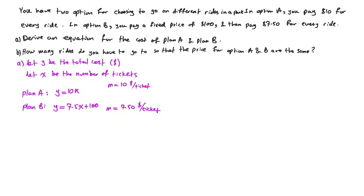For part B of this question: how many rides do you have to go on so that the price for option A and option B are the same? If you go on one ride, plan A costs $10 and plan B costs $107.50 — definitely not the same. Over the long run, plan B is cheaper because once you pay the $100, every ticket is much cheaper. But in the short run, plan A is cheaper, as shown by just one ticket: $10 versus $107.50.